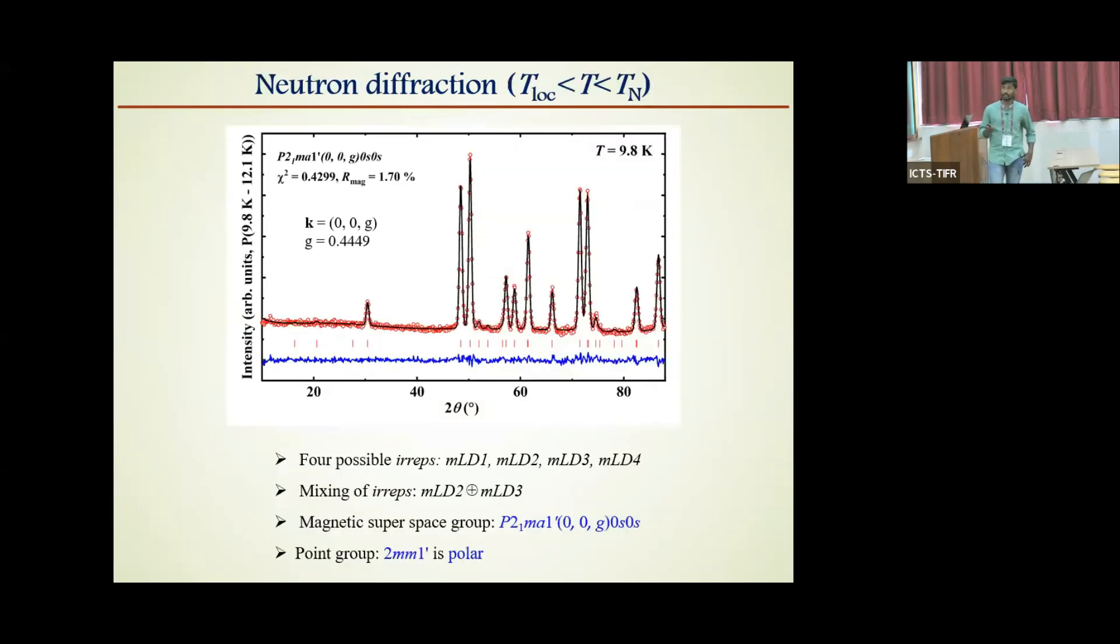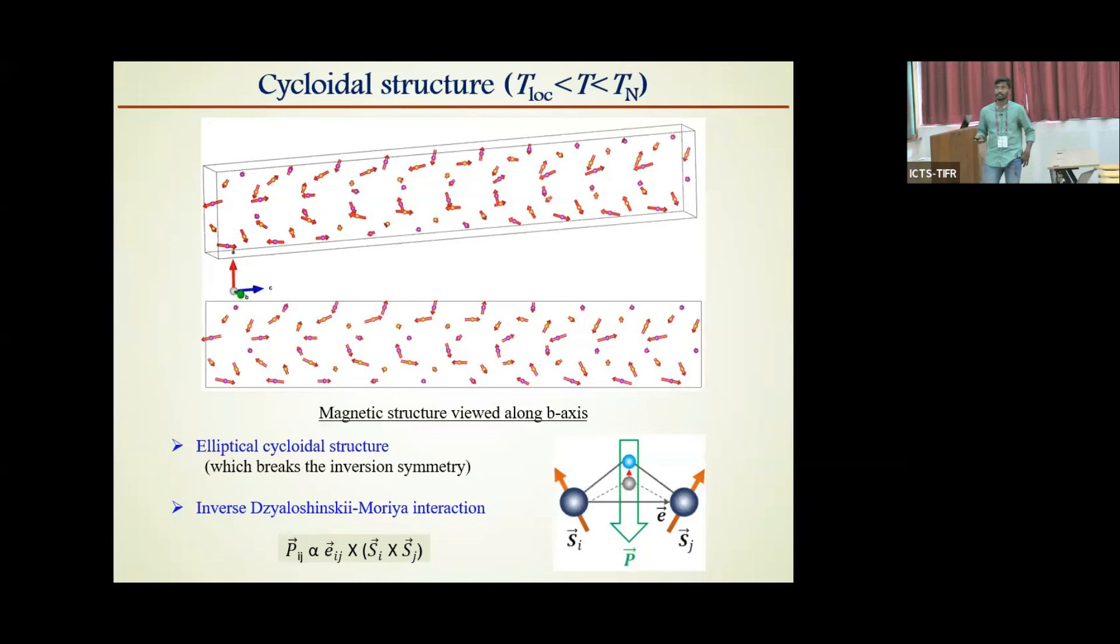And further, we have analyzed the neutron diffraction data at 9.8 Kelvin, which is below TN and above T lock-in. In this region also, we have observed the magnetic symmetry polar. And the most important thing is the obtained magnetic structure is elliptical cycloidal structure. As we know, elliptical cycloidal structure breaks the inversion symmetry according to inverse Dzyaloshinskii-Moriya interaction and allows polarization. So our experimental results including neutron diffraction confirm that the Gd2BaCuO5 compound is type 2 multiferroic.